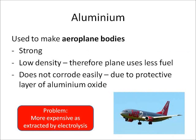Aluminium is used to make aeroplane bodies because it's strong but also has a low density — it's quite light, so the plane uses less fuel than if it had a body made of steel. It also doesn't corrode easily because it has a protective layer of aluminium oxide. One problem with aluminium is that it's quite expensive to extract because it requires electrolysis.